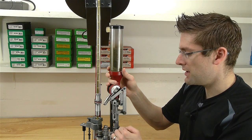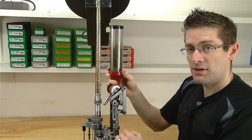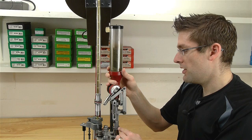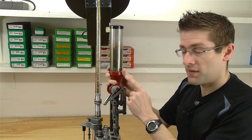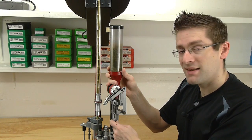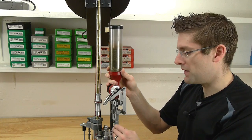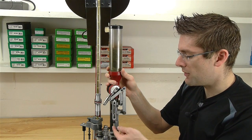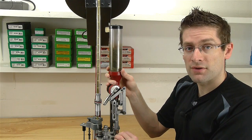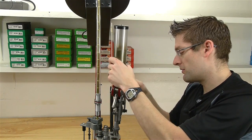And we also have this stop bracket, which when you are using a combination expander, PTX expander with the powder measure, that allows you to fine tune the amount of case mouth belling, the expansion that you put on the case very easily by just loosening one of these nuts and screwing the screw. So that's another great feature.